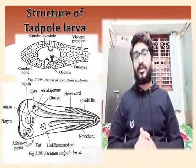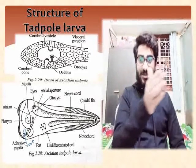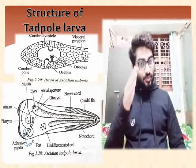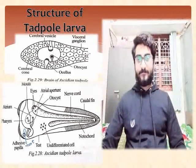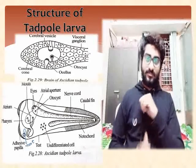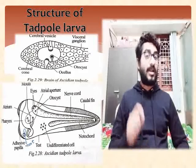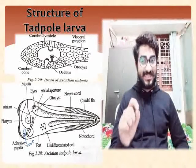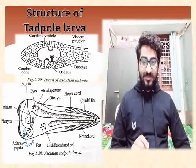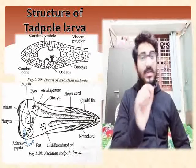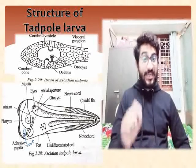The test or tunic is made up of a chemical structure called tunicin, which I have discussed in the general characters of Urochordata. The body is divided into trunk and tail. The trunk is towards the anterior side and the tail is towards the posterior side. The anterior end of the trunk has sucker-like structures called adhesive papillae. The function of adhesive papillae, as the name indicates, is adhesion.